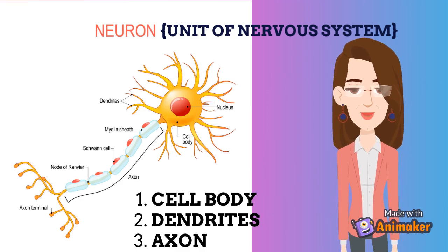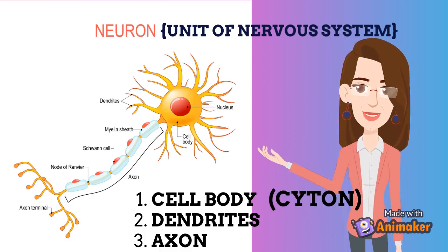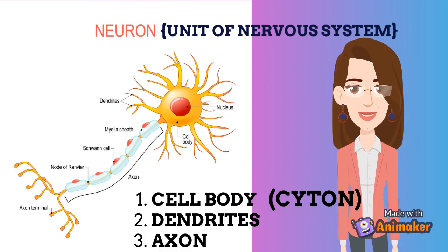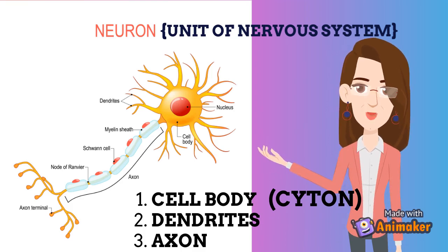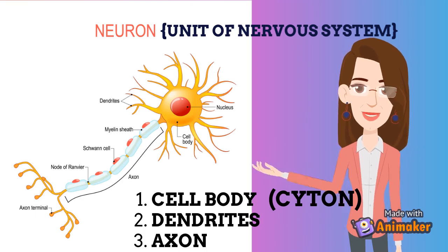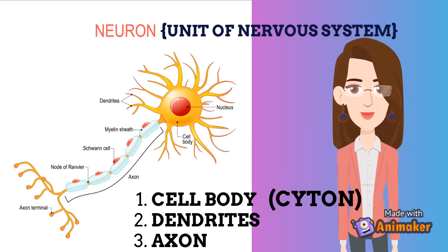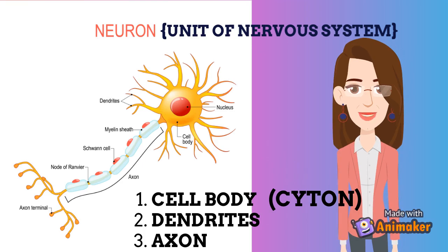The cell body is known as the pericarion or cytron. Peri means surrounding and carion means nucleus. It contains a well-defined nucleus surrounded by granular cytoplasm. It has all the cell organelles like other cells, except the centrosome is absent because nerve cells have lost their ability to divide. The dendrites are cytoplasmic projections of the cell body — dendron means tree or branches, and dendrites look like the branches of a tree. They conduct nerve impulses to the cytron.